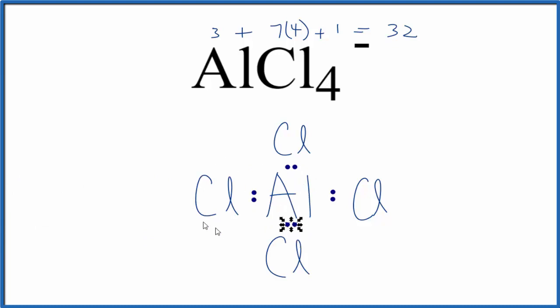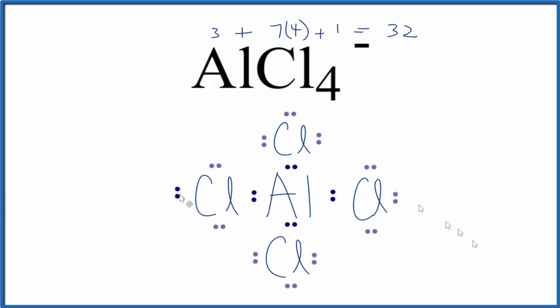After that, we'll go around and complete the octets on the chlorine atoms until we run out of valence electrons. At this point we've used all 32 valence electrons. The aluminum has an octet, and each of the chlorine atoms also has an octet.